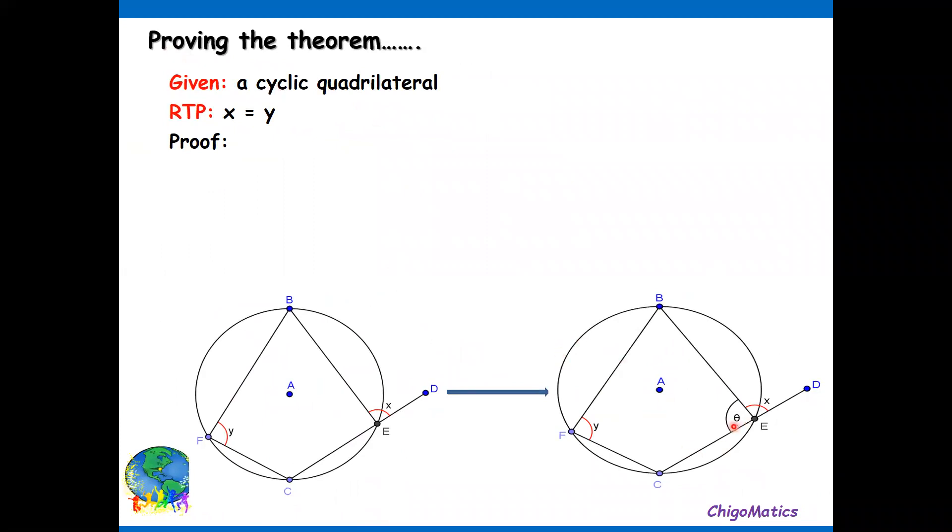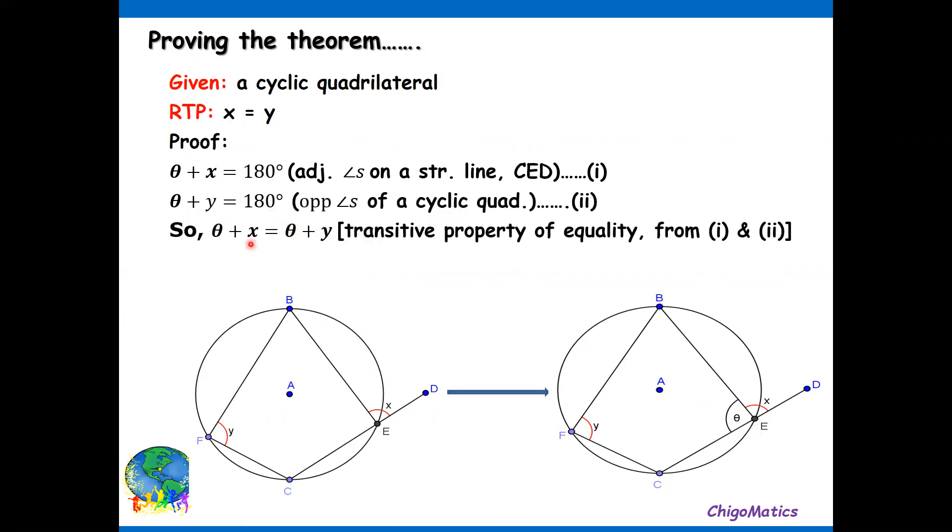Having said that, I've simply labeled this angle theta for reference purposes. To prove now, we start by the angles on a straight line: if we add x plus theta it gives us 180. Then theta plus y equals 180 for the cyclic quad. So using the transitive property of equality, since we have on the right-hand side 180 equals 180, the left-hand side should also be equal. So theta plus x equals theta plus y.